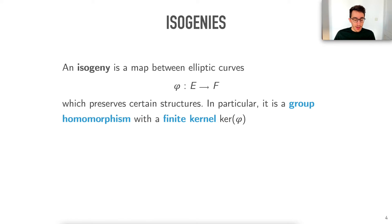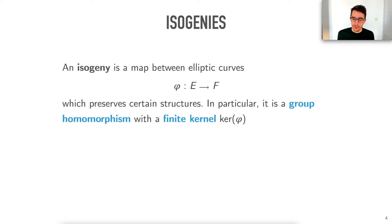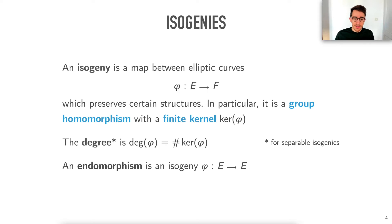Now isogenies. Isogenies are simply maps between elliptic curves. If you are given two elliptic curves e and f, an isogeny sends points on e to points of f. It's not just any map — it's a map that preserves certain structures. In particular, we want this map to be a group homomorphism. On top of being group homomorphisms, they always have finite kernels over algebraically closed fields, which allows us to define the degree. The degree of an isogeny phi is the size of this kernel, which we know is always a finite number.